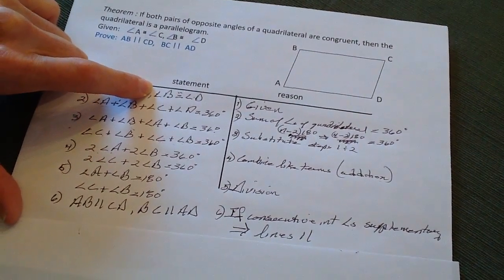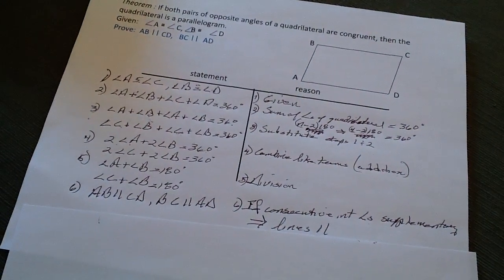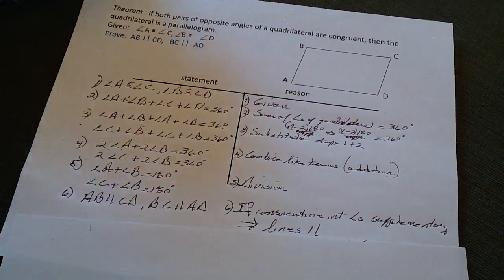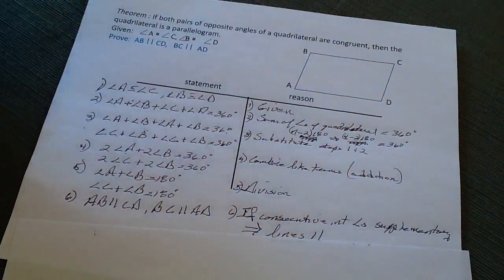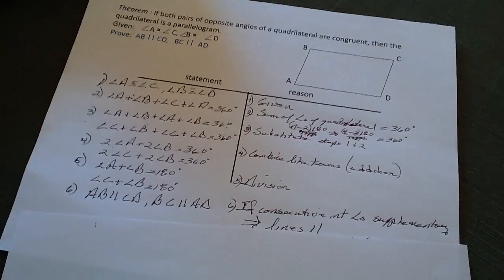So, that proves the converse that we have just started off here. So now, if we know that the opposite angles of quadrilateral are congruent, then the quadrilateral has got to be a parallelogram. Thank you.